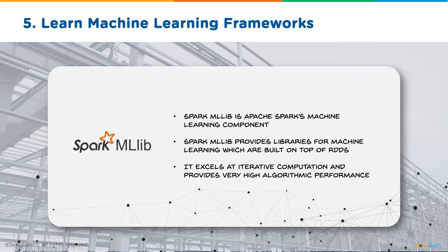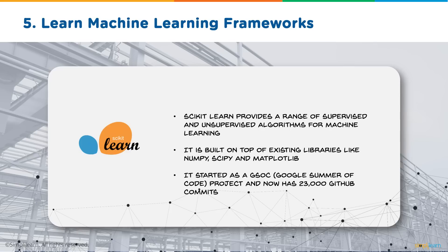The Spark ML library is Apache Spark's machine learning component. It provides machine learning libraries built on top of RDDs — resilient distributed datasets — and is very good at providing iterative computation with high algorithmic performance. Scikit-learn provides a huge range of supervised and unsupervised algorithms for machine learning. It is built on existing libraries like NumPy, SciPy, and Matplotlib. Scikit-learn started as a Google Summer of Code project and now has over 23,000 GitHub commits.